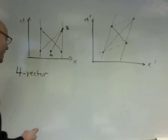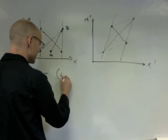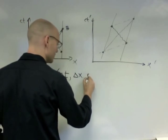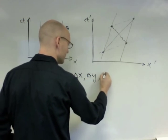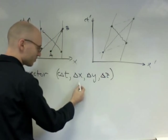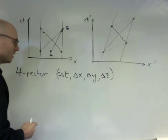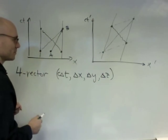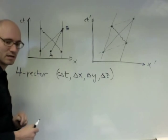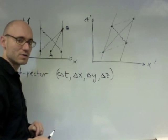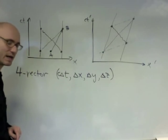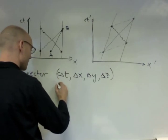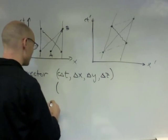That four-vector has four components. It has a delta T, well, I should call it a C delta T, a delta X, a delta Y, and a delta Z, because there's three spatial dimensions and one time dimension. For now, we don't care about these because we're thinking about just one-dimensional problems. We're just thinking about the XT plane.